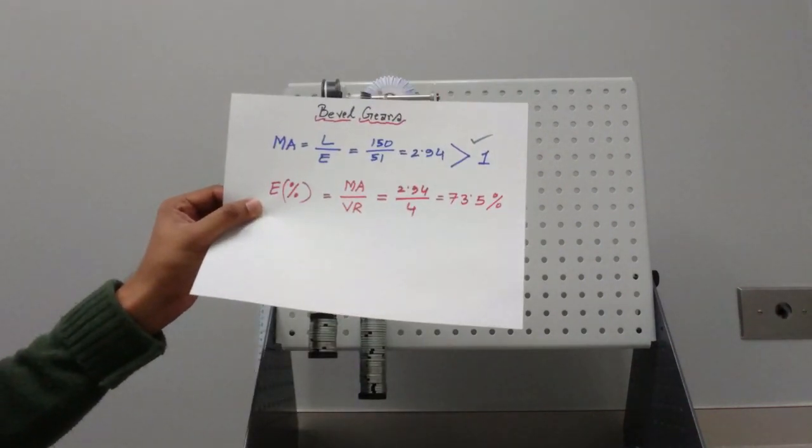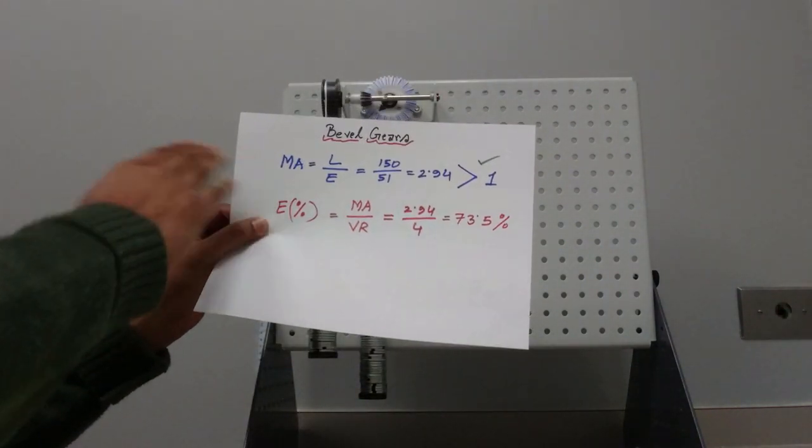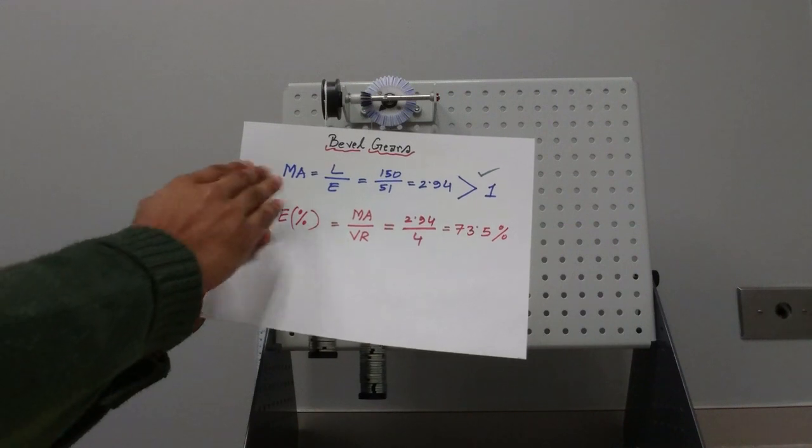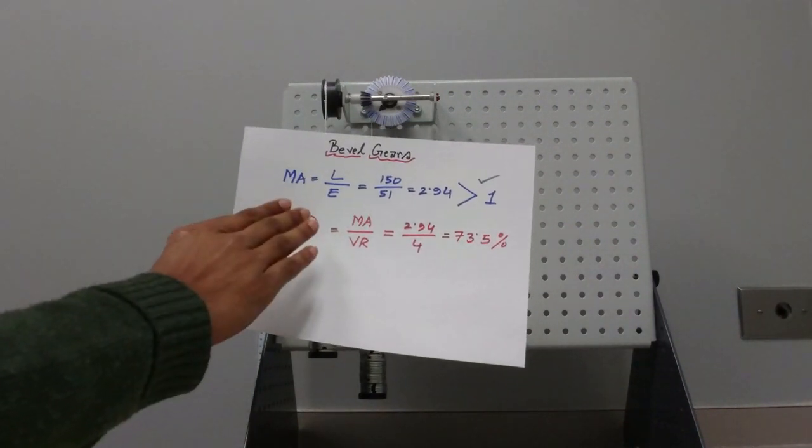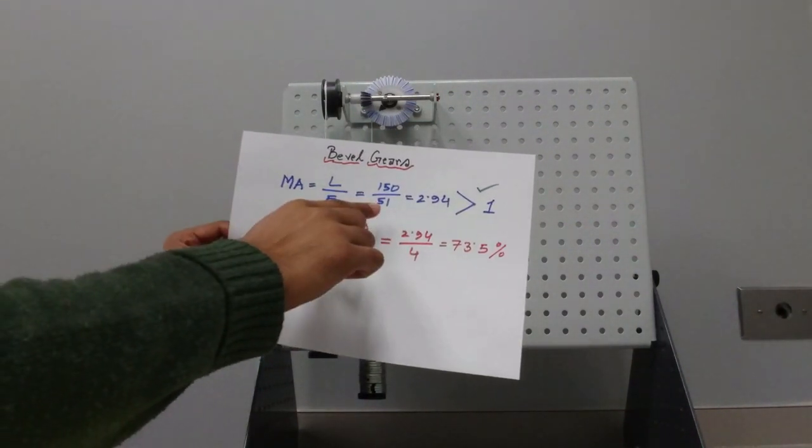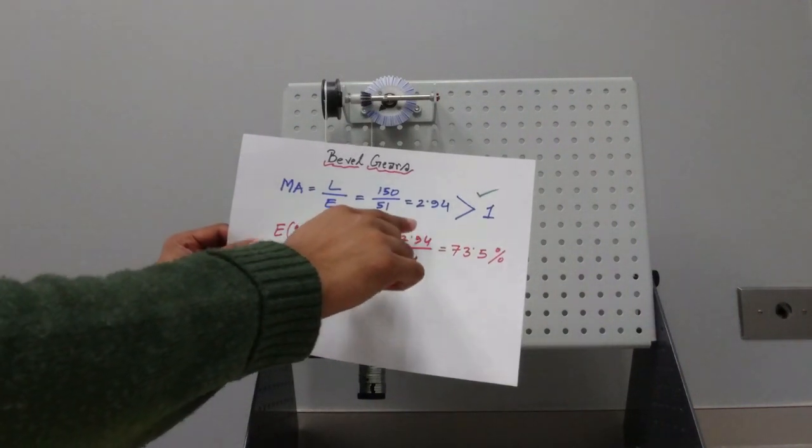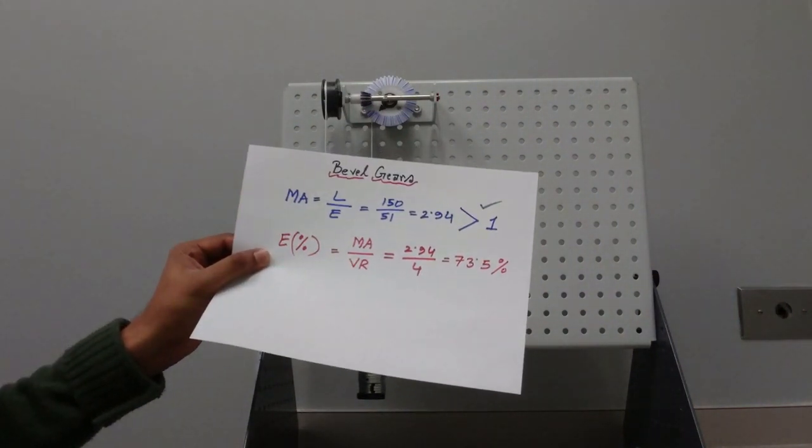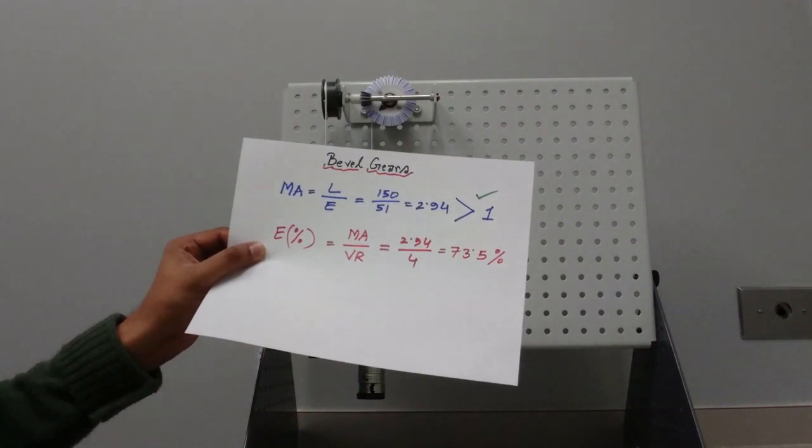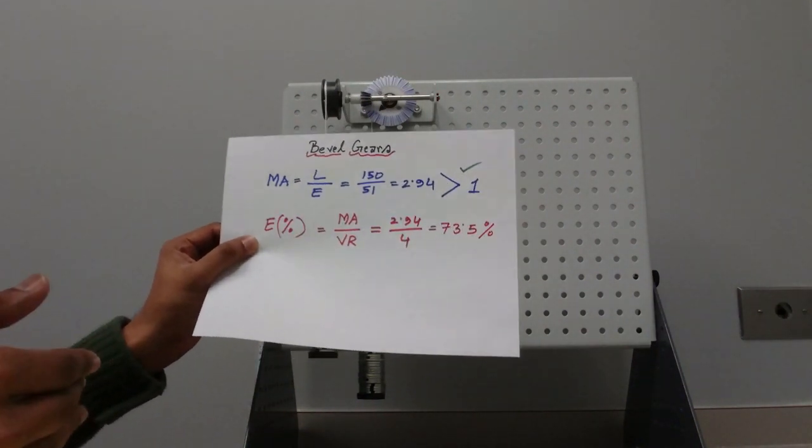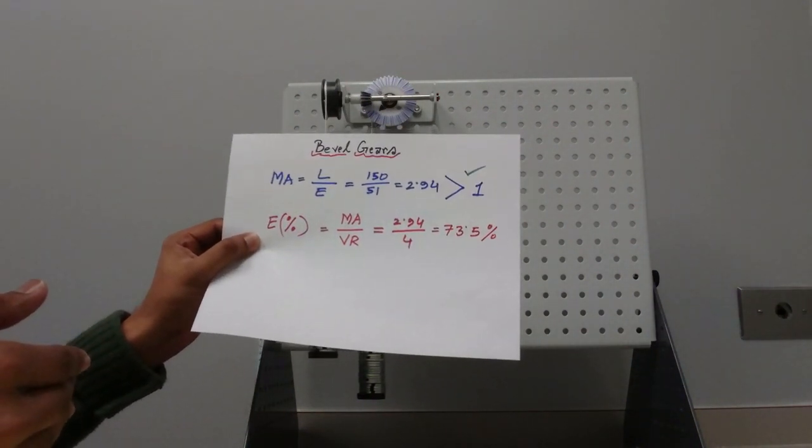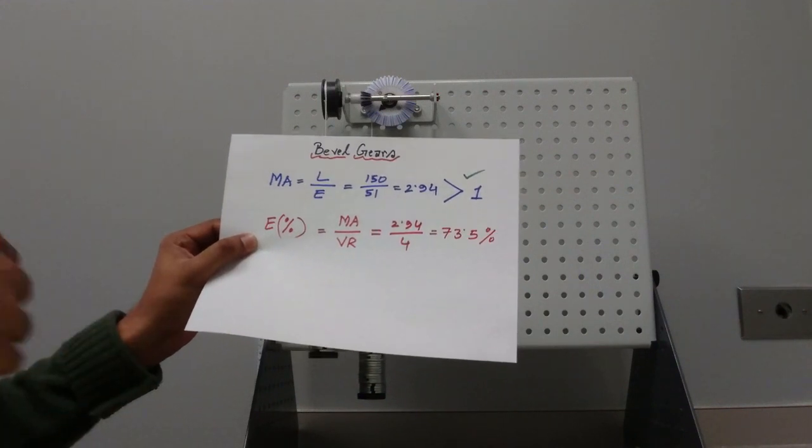Now we're going to show you one step for one data point, how to find mechanical advantage and efficiency. Mechanical advantage is the ratio of load over effort. So for the first data point, 150 load takes 51 effort, so the mechanical advantage is 2.94, which is greater than one. That means we need less effort to raise a higher load. Efficiency: how do we find efficiency? It is the ratio of mechanical advantage over velocity ratio.